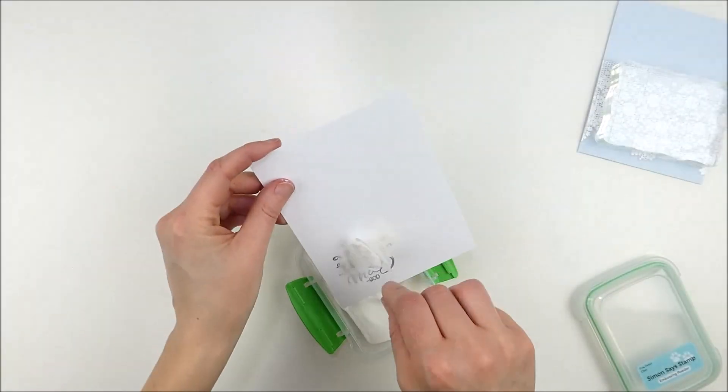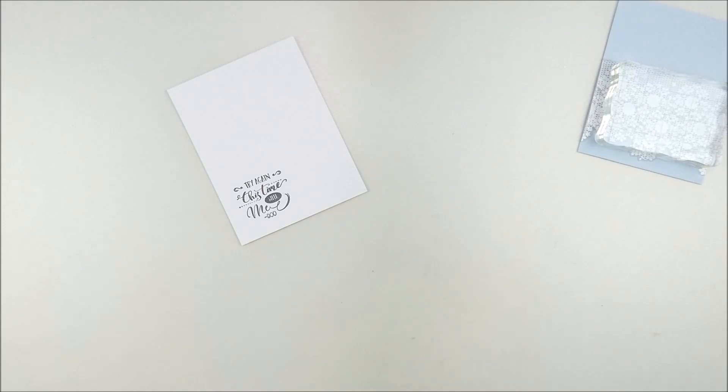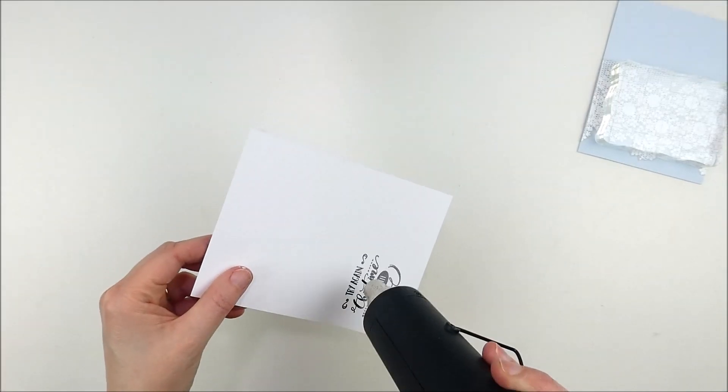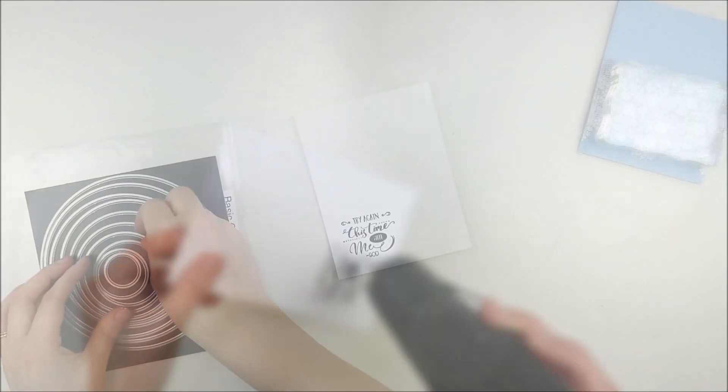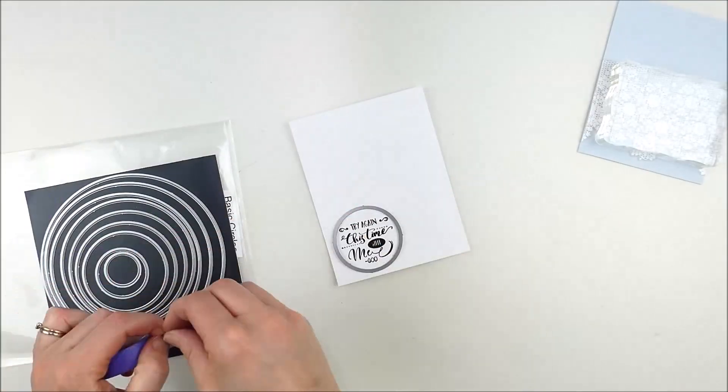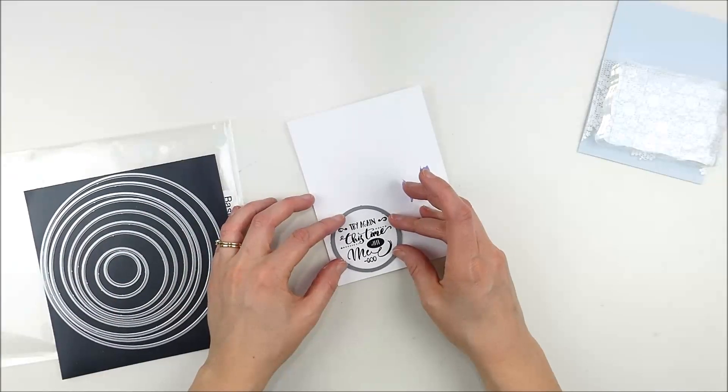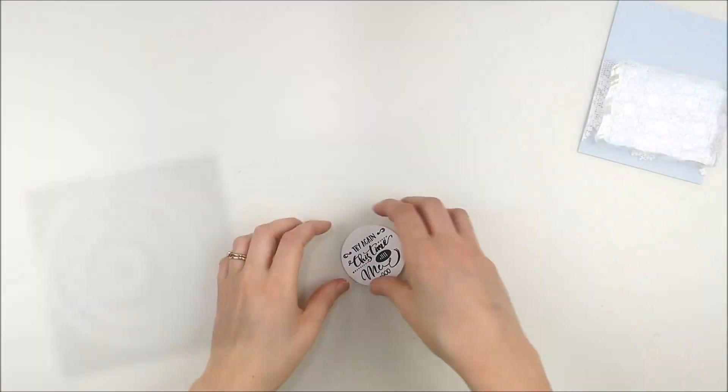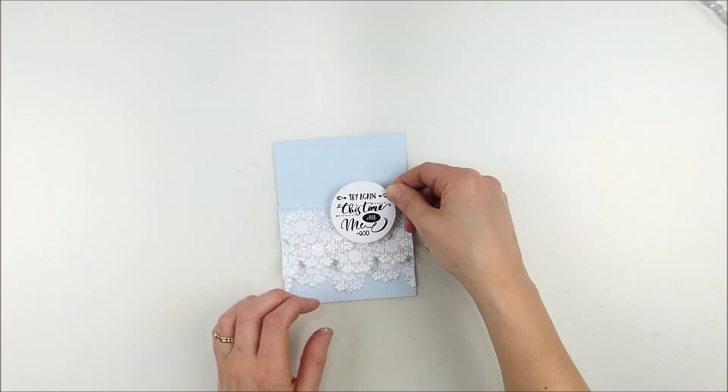I stamped it in black Versafine ink, which is a pigment ink. To add to that glossy shine, I went ahead and heat embossed that with clear embossing powder. Then I'm going to cut a circle out with just some basic circle dies—anything you have in your stash would work.